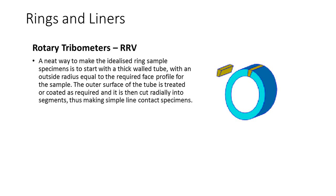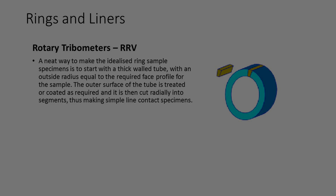With three lever arms arranged at 120-degree intervals, an axial load applied to the cone results in equal forces being applied to each specimen, normal to the bore of the liner. The axial position of the ring sample carrier within the bore can be adjusted to allow multiple wear tracks to be run at different positions on each liner. A neat way to make the idealised ring sample specimens is to start with a thick-walled tube with an outside radius equal to the required face profile. The outer surface of the tube is treated or coated as required, then cut radially into segments, thus making simple line contact specimens.